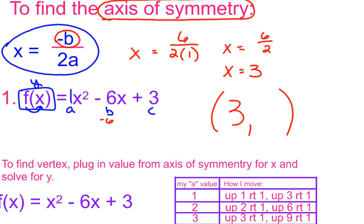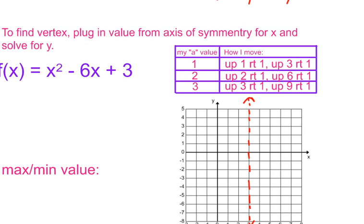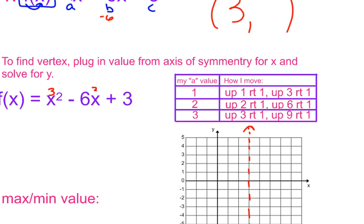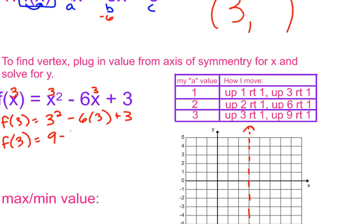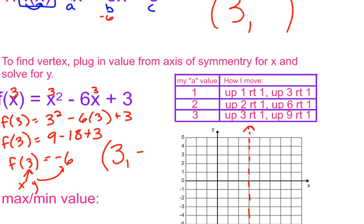To find the y-coordinate, I substitute x = 3 into the original equation. So f(3) = 3² - 6(3) + 3 = 9 - 18 + 3 = -6. This tells me when x is 3, y equals -6. So my vertex is (3, -6).